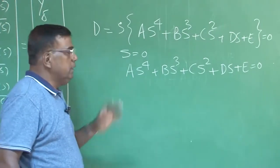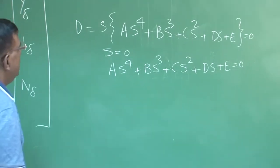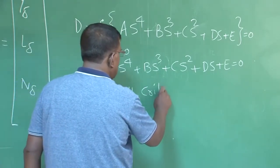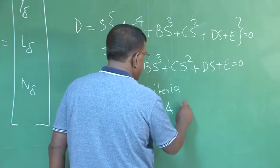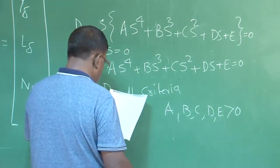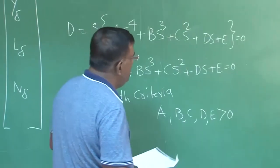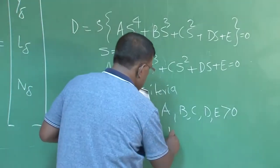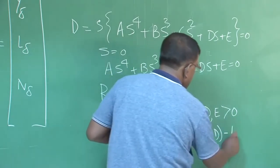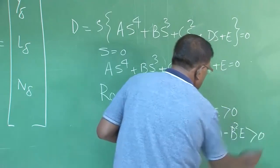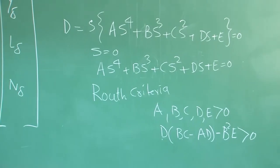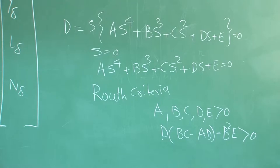Now, from the quartic we apply the Routh criteria. You know the Routh criteria requires A, B, C, D, E all greater than zero, and additionally D times (B·C minus A·D) minus B squared·E greater than zero. You also understand that if E is less than zero, that means one root has its real part on the positive side — dynamic instability.